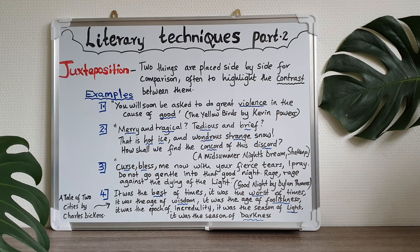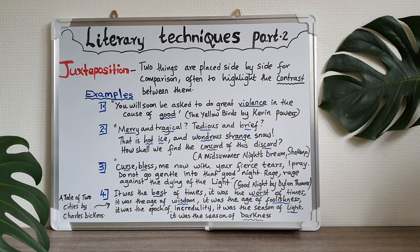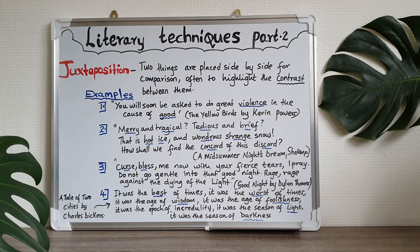Once more you can see that the writer has employed juxtaposition because we have words that are opposite in meaning being placed side by side. We have curse and we have bless. We have good night and the dying of light — with one of them the light is almost dying, coming to an end, and with the other you have a good night. And like I said, it's not enough to identify juxtaposition in a text — you need to explain the effect achieved through its use.